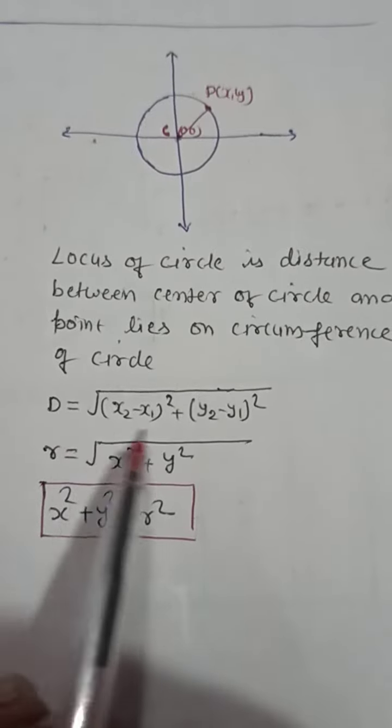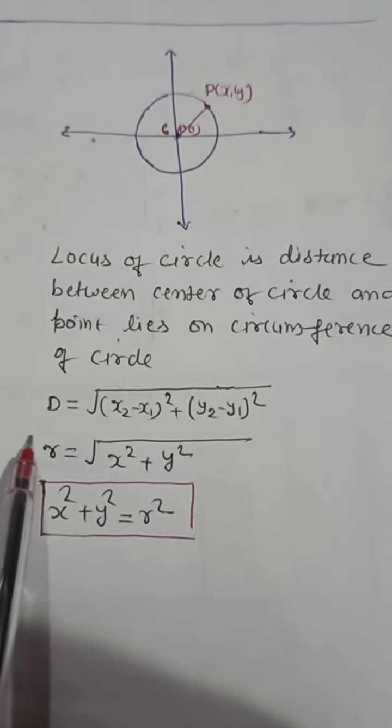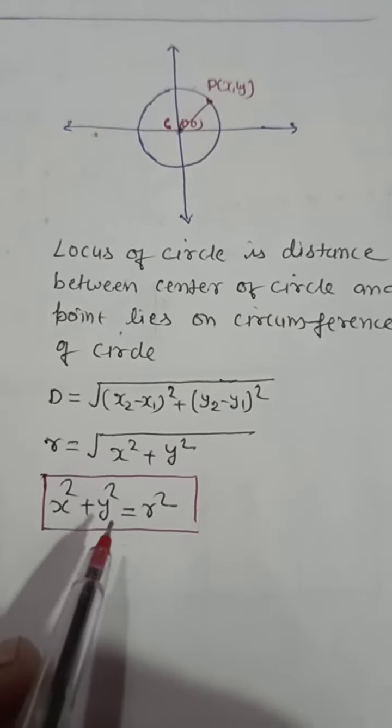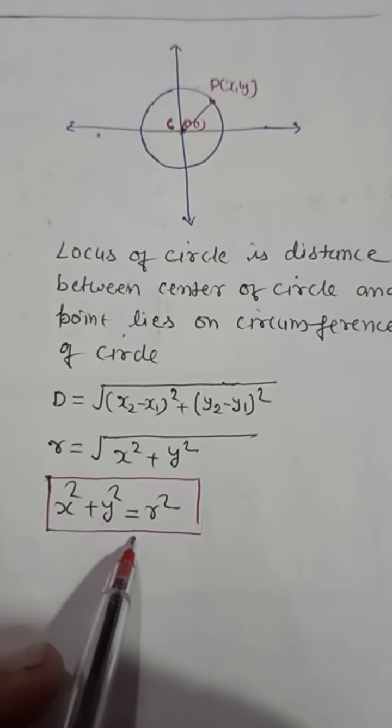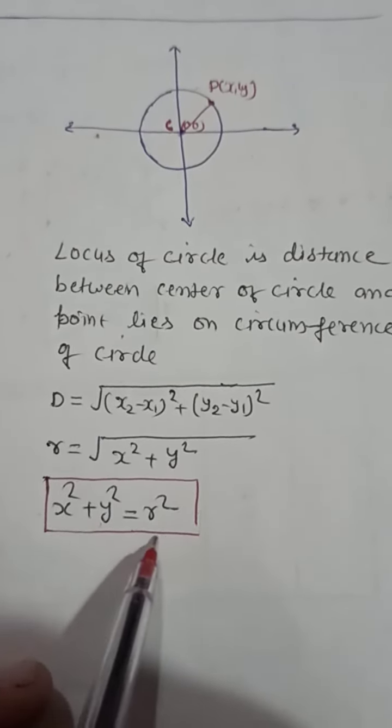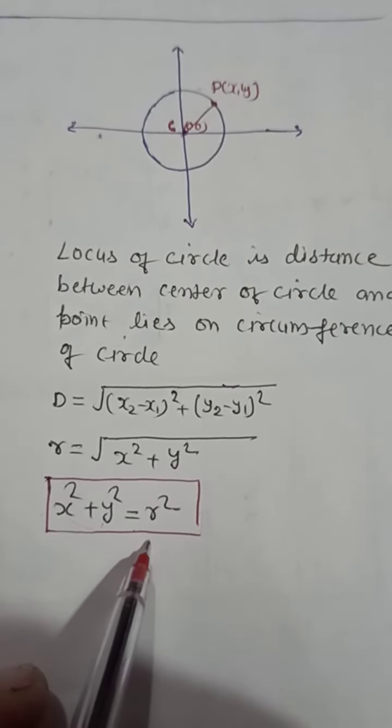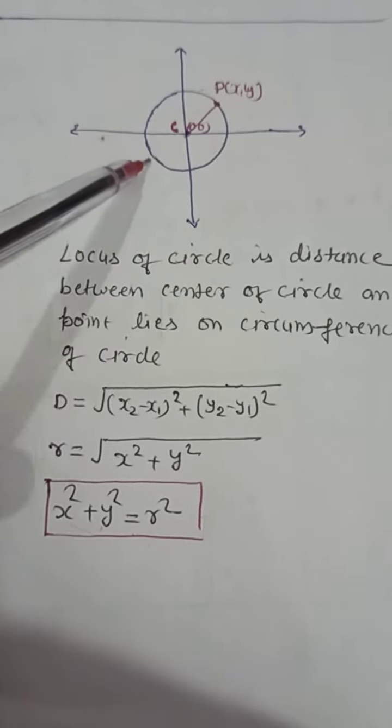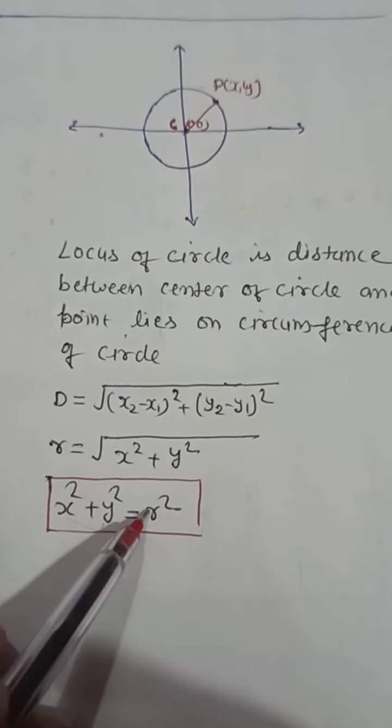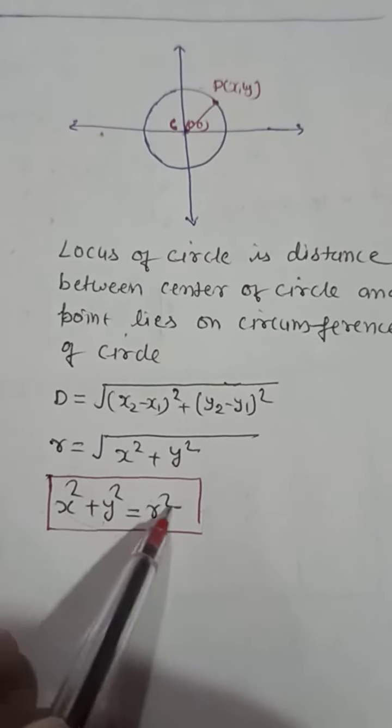Now this is the distance, this is the locus of the circle. You can use this locus and you will find the final equation of the circle. So this is the equation of the circle where the center lies on the origin, and you will get such kind of equation. If the radius is known, you can find the direct equation of circle.